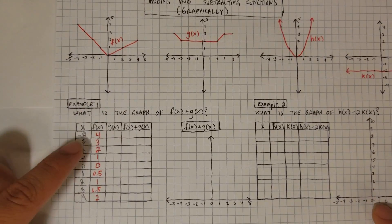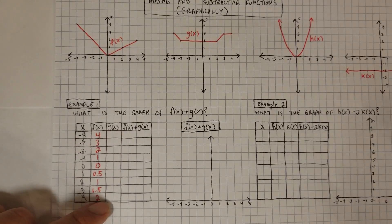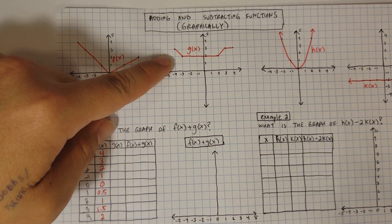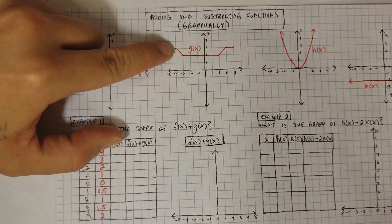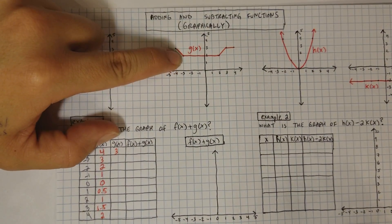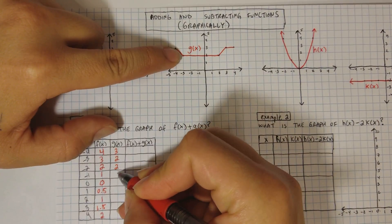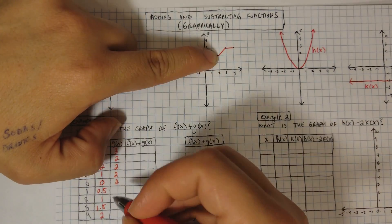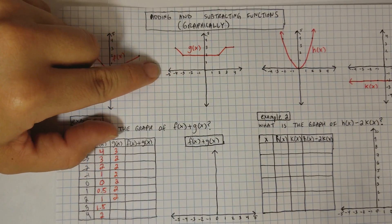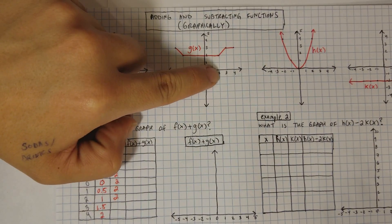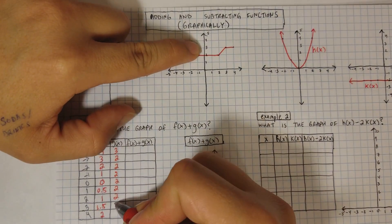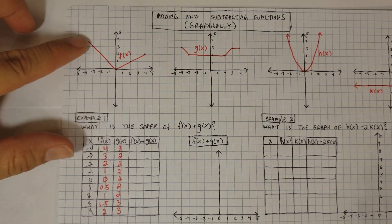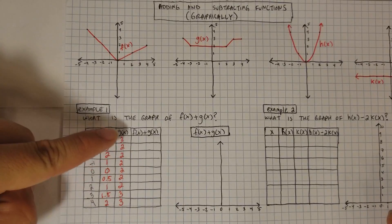Now I have the graph and the table with corresponding values for f(x). I'll do the same for g(x). The value of g(x) at negative 4 is 3. Then at negative 3, it goes down to 2, and then it stays constant at 2 all the way through — negative 2, negative 1, 0, 1, 2 — all at 2. Then at x = 3, it goes back up to 3, and at 4, it's 3 again.